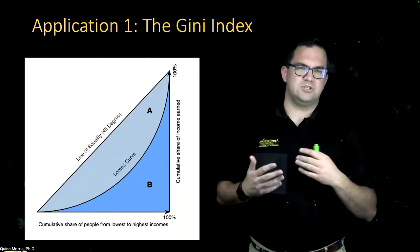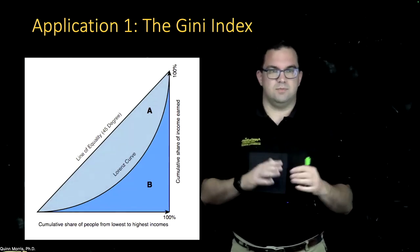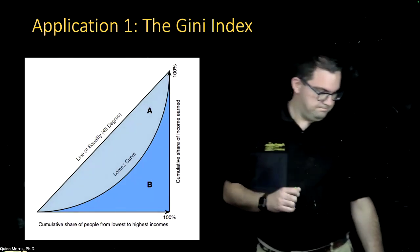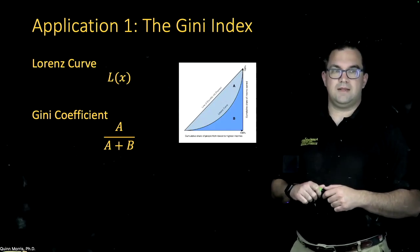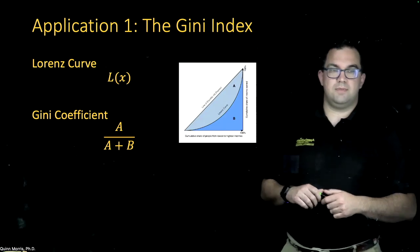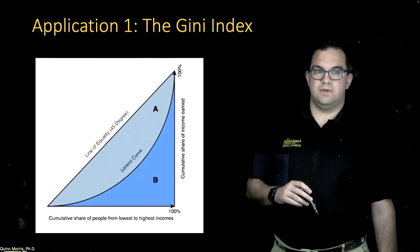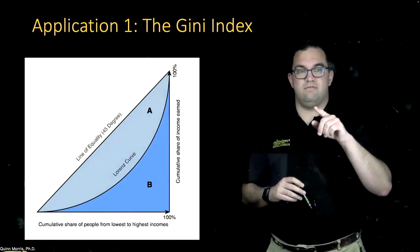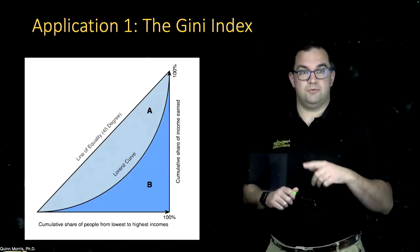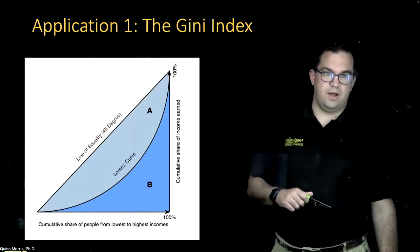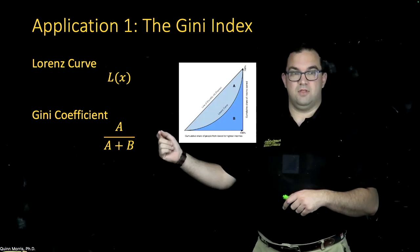It's impossible for the bottom 5% to have more than 5% of the income — otherwise, they wouldn't be the bottom 5%. So the Lorenz Curve always lies below or on this line of equality; it can never go above. You can show further properties — for example, that it must be convex. If we call that Lorenz Curve L(x), then we'd like to measure the Gini coefficient, which is just going to be the ratio of the area A to the total area A plus B.